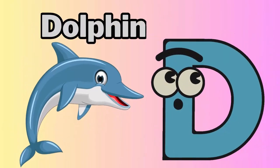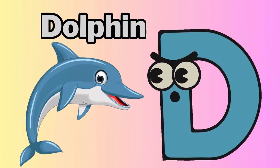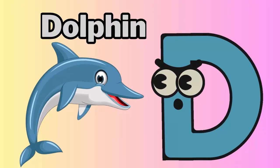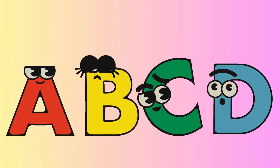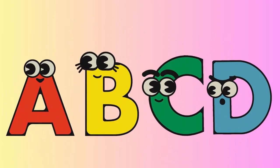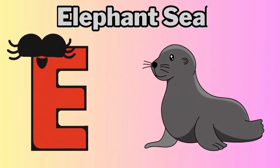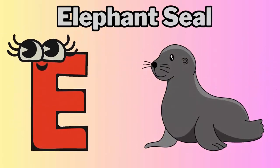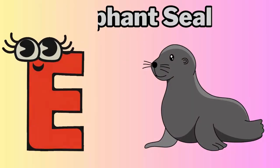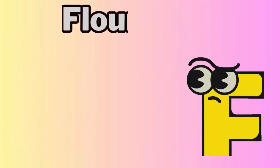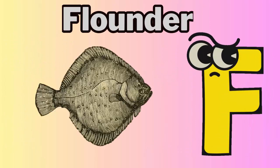D is for dolphin — dolphin. E is for elephant seal — elephant seal. F is for flounder — flounder.